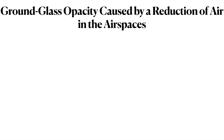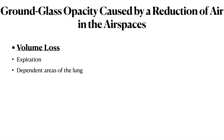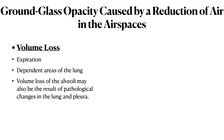Ground glassing caused by reduction of air in the air spaces occurs due to volume loss. This can occur physiologically during expiration, in the dependent areas of the lungs, or pathologically when the lung parenchyma is unable to expand fully due to some pathology, resulting in reduced air in the air spaces.